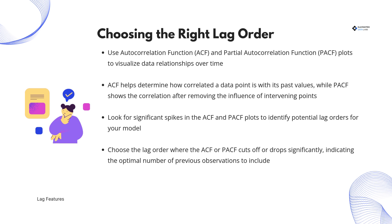ACF shows the correlation of a data point with all previous values, while PACF focuses on the correlation after removing the influence of intervening points. By analyzing significant spikes in these plots, we can determine the optimal lag order to include in our model. This step ensures that our model captures underlying patterns effectively.